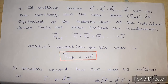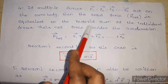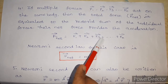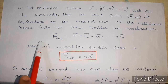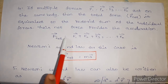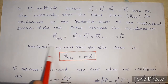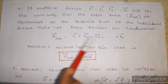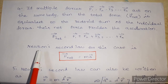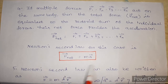Fourth point: if multiple forces F1, F2, F3 and so on act on the same body, then the total net force F-net is equal to the vector sum of the individual forces. F-net vector equals F1 vector plus F2 vector plus F3 vector plus ... plus Fn vector. Newton's second law for this case is F-net equal to M times A vector.